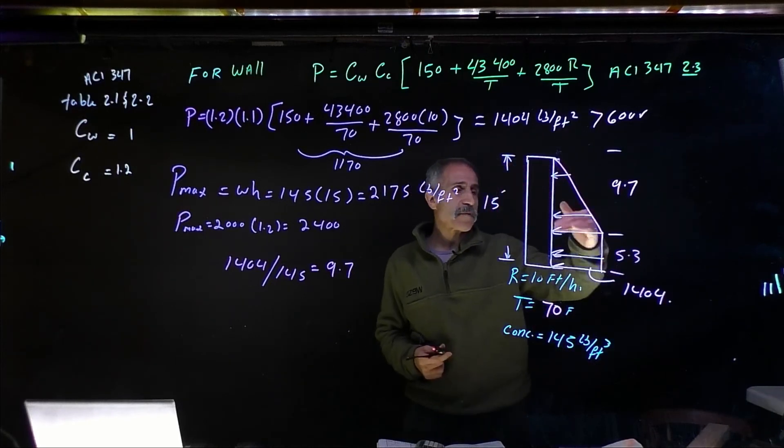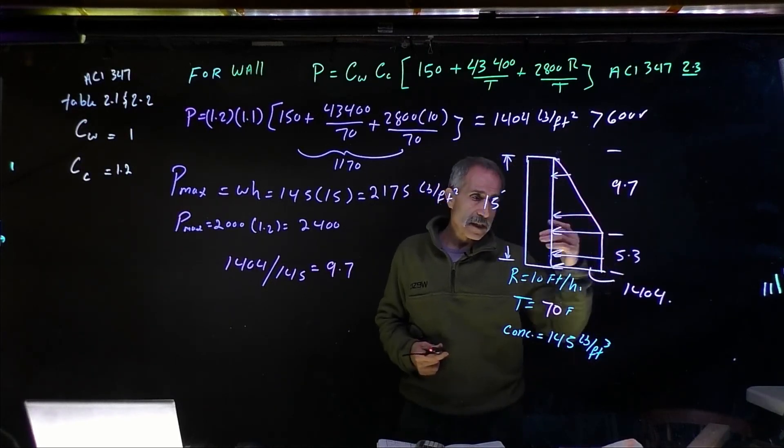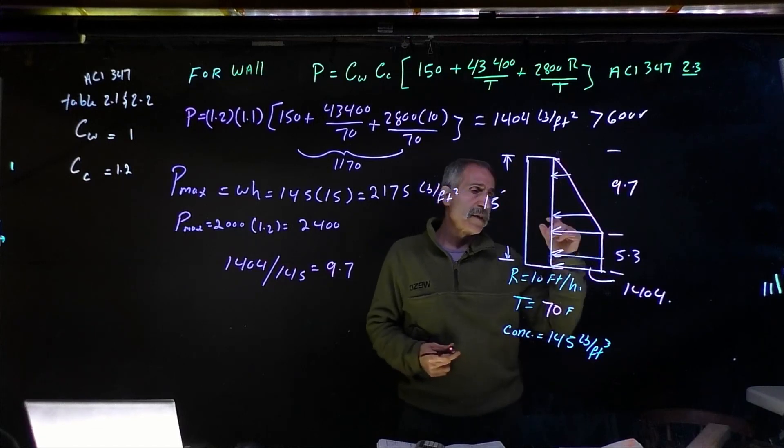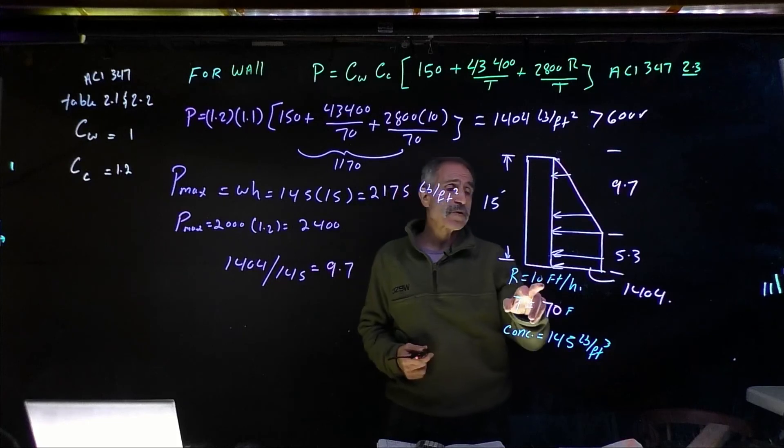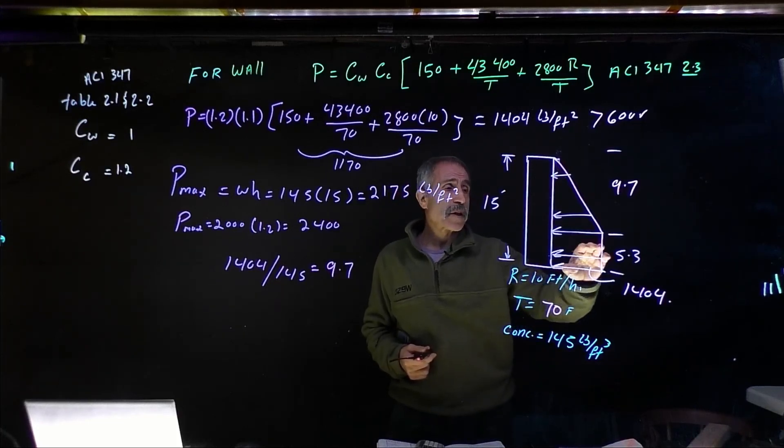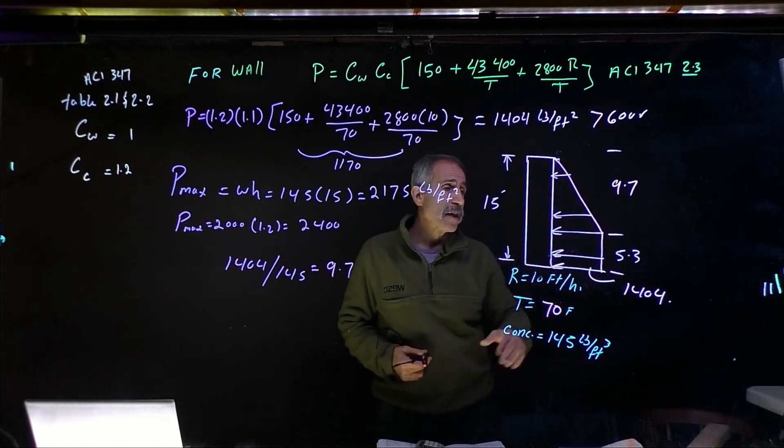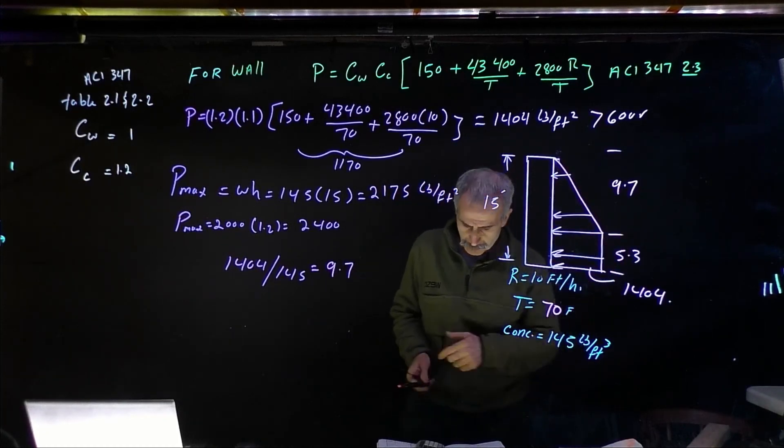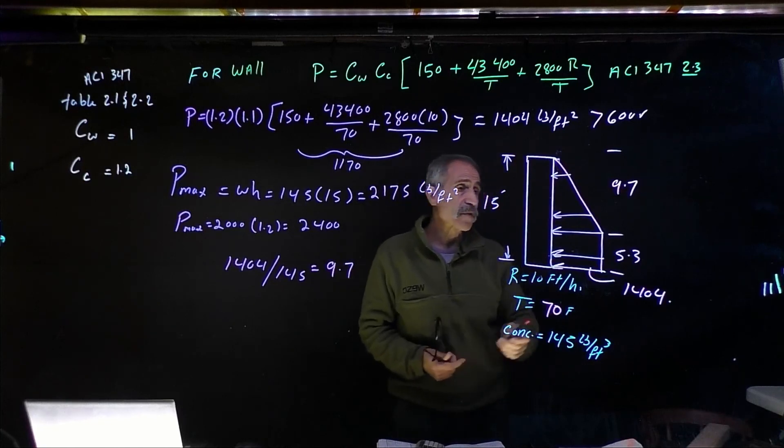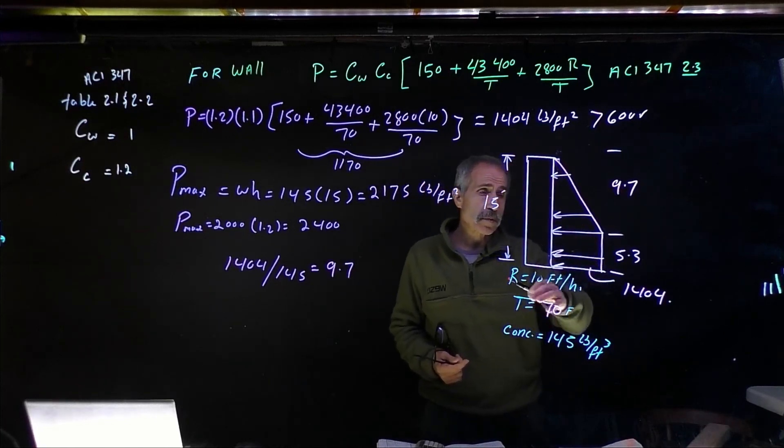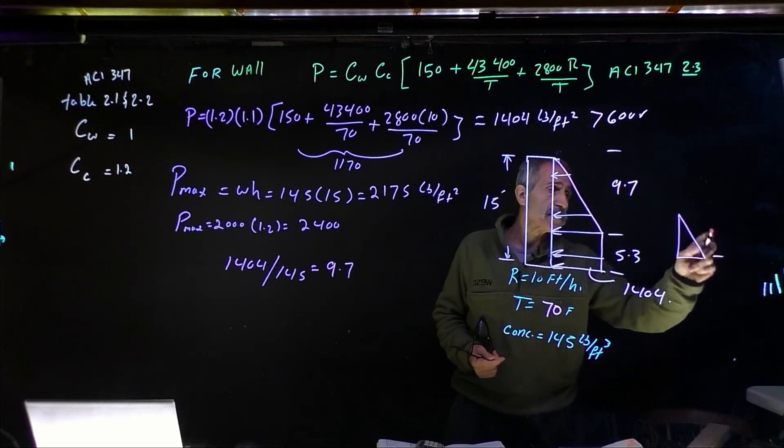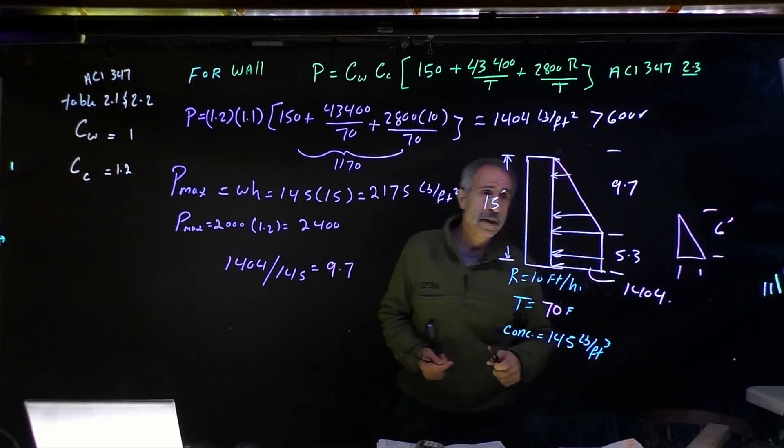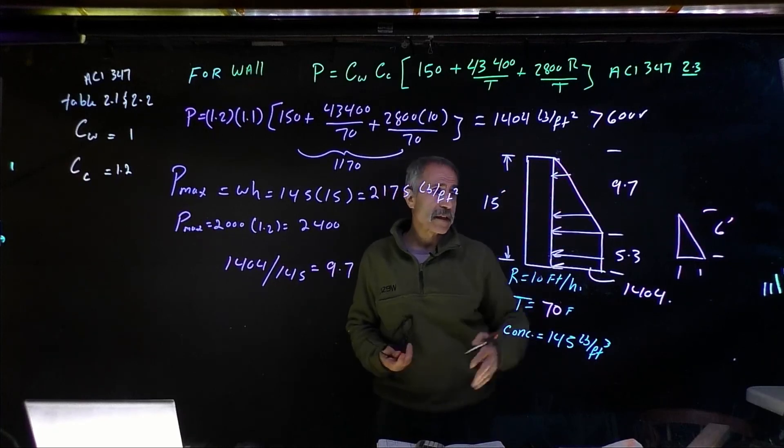So for the first 5.3 at a rate of 10 feet per hour, you have this type of pressure. Again, you've got to pay attention. When you change your rate, you might have a wall pressure. This might go up and down based on your rate. And if you have a short wall, for example, if you've got a 6-foot wall because your wall is too short based on your rate, you might end up with something like this for a 6-foot wall. And then you can calculate this pressure. So this is basically how we calculate that.